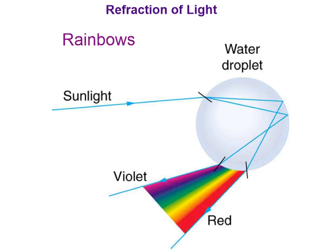Refraction of light also explains why we see rainbows. Just like prisms, a water droplet in the air also refracts light. The refraction of the different wavelengths causes white light from the sun to separate into individual colors. In order of decreasing wavelength, the colors are red, orange, yellow, green, blue, indigo, and violet.